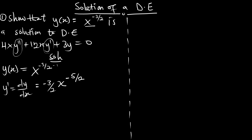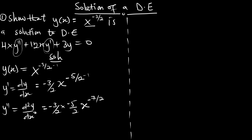Our second derivative y'', d²y/dx², is also going to be: we multiply -3/2 by -5/2, giving us 15/4, and subtracting 1 from the exponent -5/2 gives us -7/2. So y'' = 15/4 · x^(-7/2).